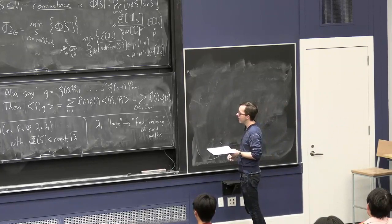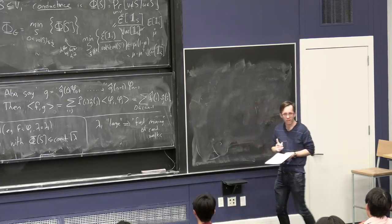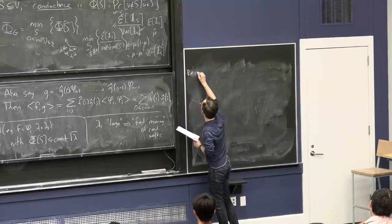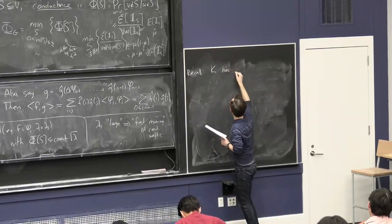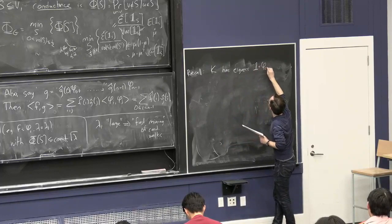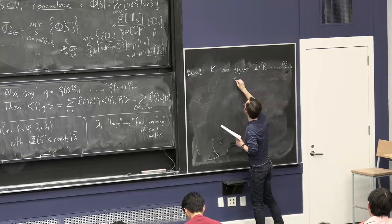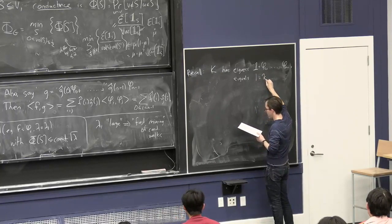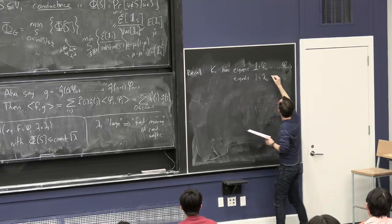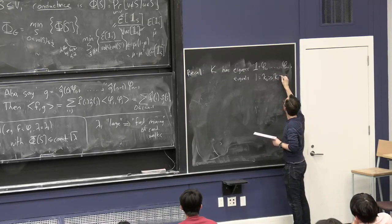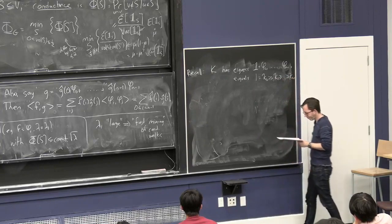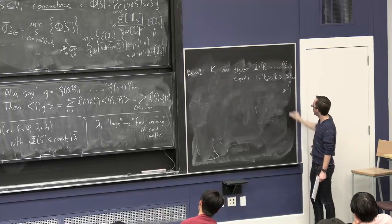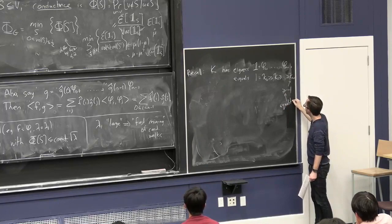Before we can state these hacks, now is the time where it's more convenient to start studying K rather than L. It's a trivial change because L is I minus K and K is I minus L, but it's good to make this trivial change. We have the transition matrix K with the same eigenvectors phi_0 through phi_{n-1}, and it has eigenvalues 1 (kappa_0) ≥ kappa_1 ≥ ... ≥ kappa_{n-1}. Because the largest possible value for L is 2, the smallest possible value for K is minus 1. It equals minus 1 if and only if G is bipartite.